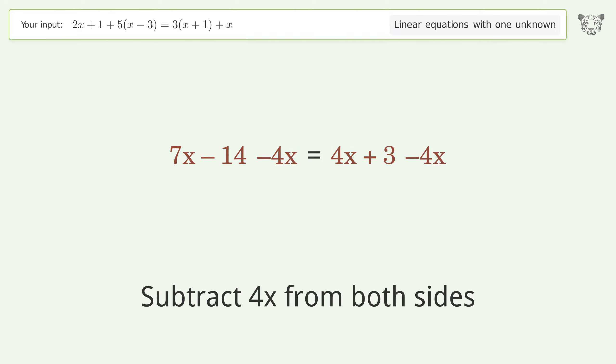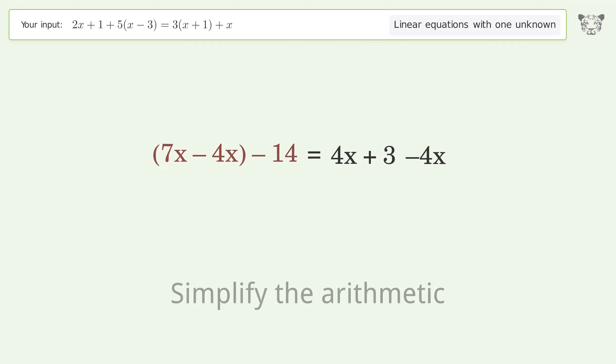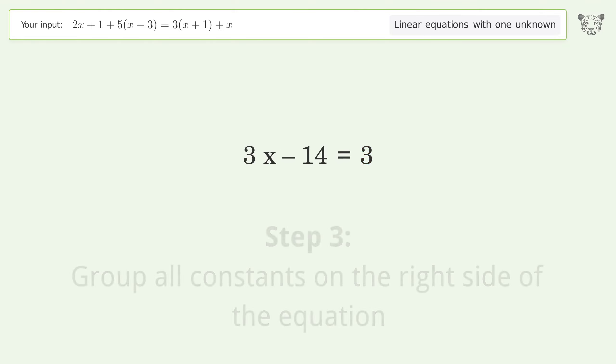Group all x terms on the left side of the equation. Subtract 4x from both sides. Group like terms. Simplify the arithmetic. Group like terms. Simplify the arithmetic.